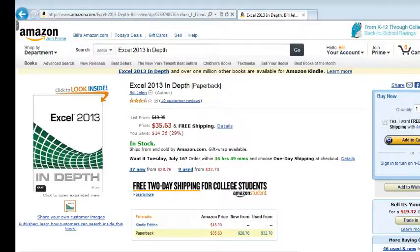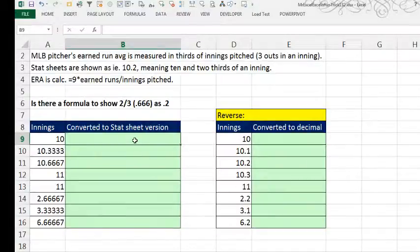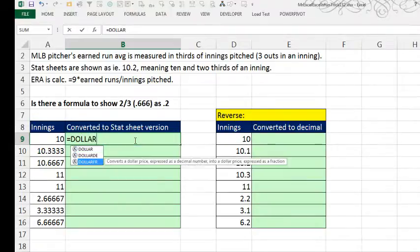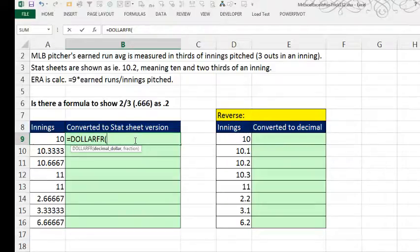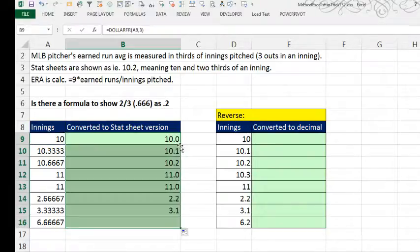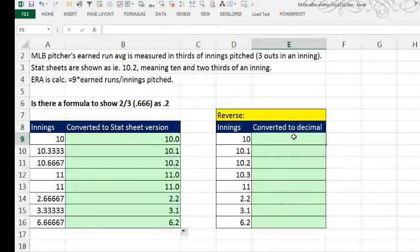And because of that, I remember this amazing solution and this was created for the stock traders back in the days when stocks were reported in eighths. And back then, 10.4 meant 10 and four-eighths, not 10 and four-tenths. So, here's the number and we want to show it in fractions where each 0.1 is a third.